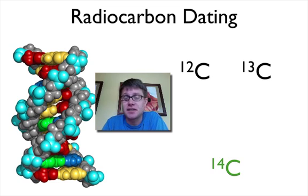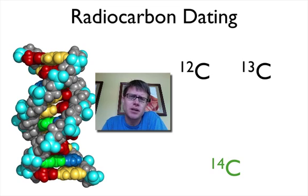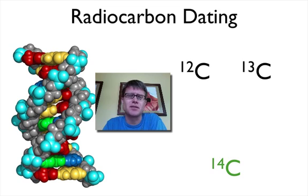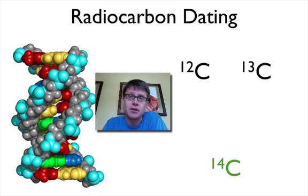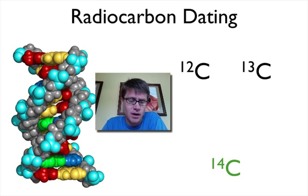Hi, this is Mr. Andersen and today I'm going to be talking about radiocarbon dating. Radiocarbon dating is a way that we use carbon — specifically the amount of carbon-14 left in an object — to figure out how old that object is. So if we find a piece of wood that we think was used by ancient humans and we want to figure out how long ago that was, we can use radiocarbon dating to do that.